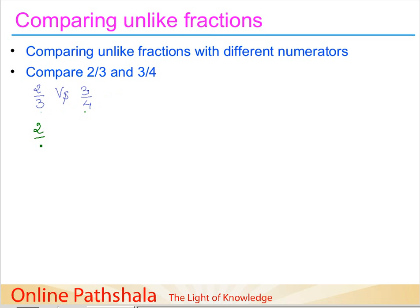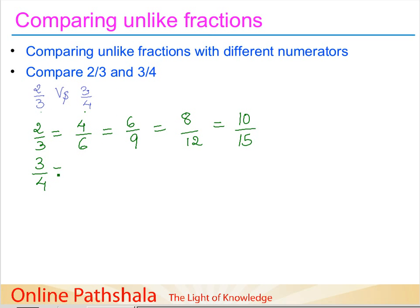For 2/3, we write equivalent fractions by multiplying: 4/6, 6/9, 8/12, 10/15, and so on. For 3/4, we write equivalent fractions: 6/8, 9/12 — and here we find a common denominator of 12. Both fractions have 12 as a denominator: 2/3 gives 8/12, and 3/4 gives 9/12.